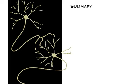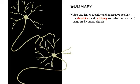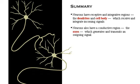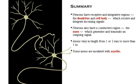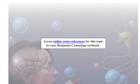Here's a summary of what we've covered. Neurons have receptive and integrative regions — the dendrites and cell body — which receive and integrate incoming signals. Neurons also have a conductive region, the axon, which generates and transmits an outgoing signal. Axons vary in length from 1 or 2 millimeters to more than 1 meter. Some axons are insulated with myelin. To test your knowledge, click the quiz button to go to the self-quiz. To access cross-references for this topic in your Benjamin Cummings textbook, click here.